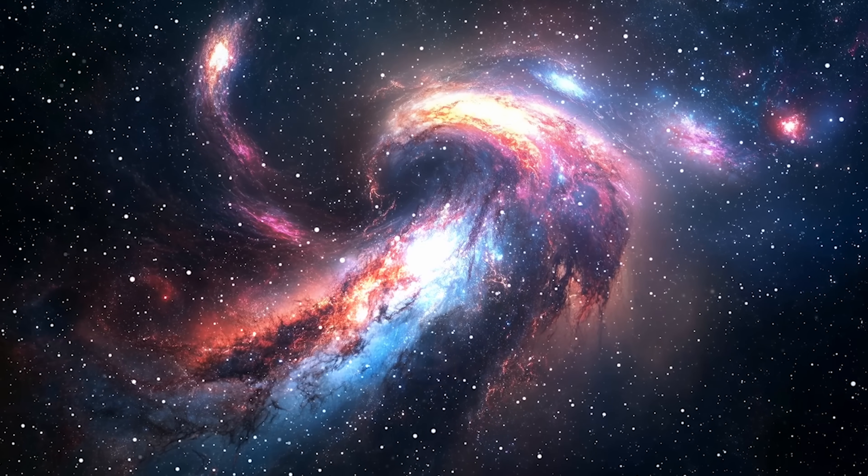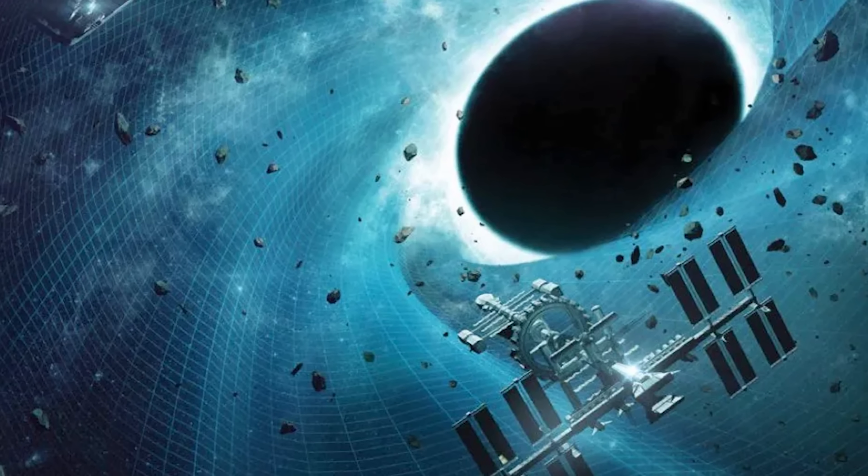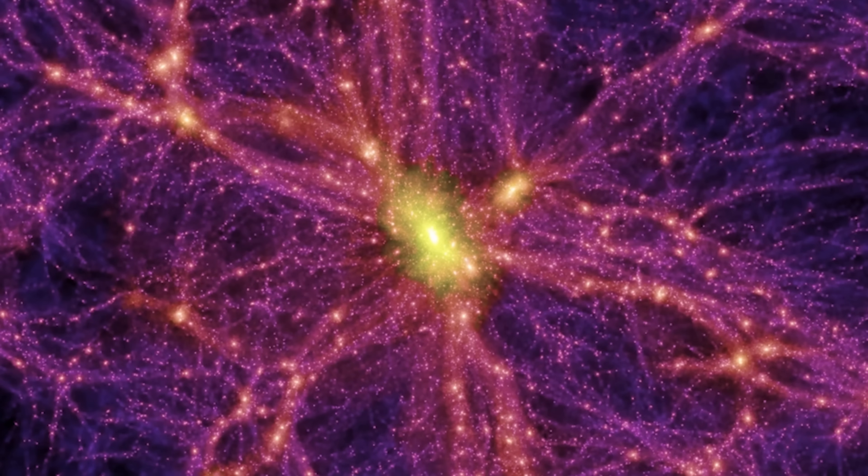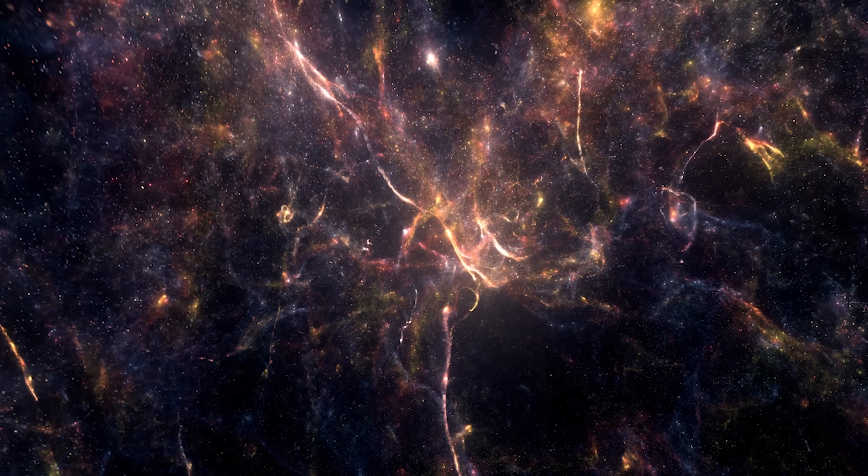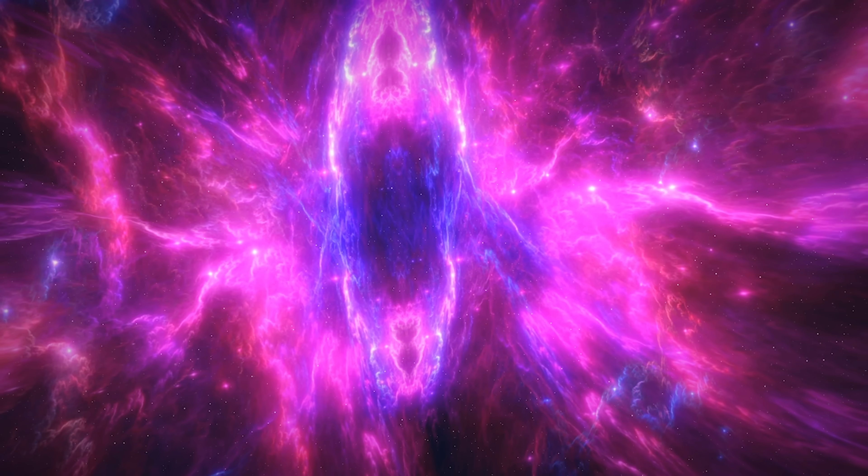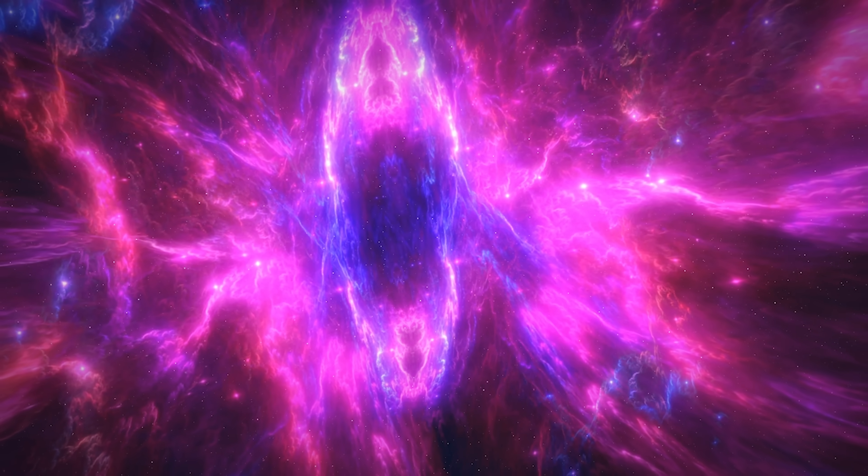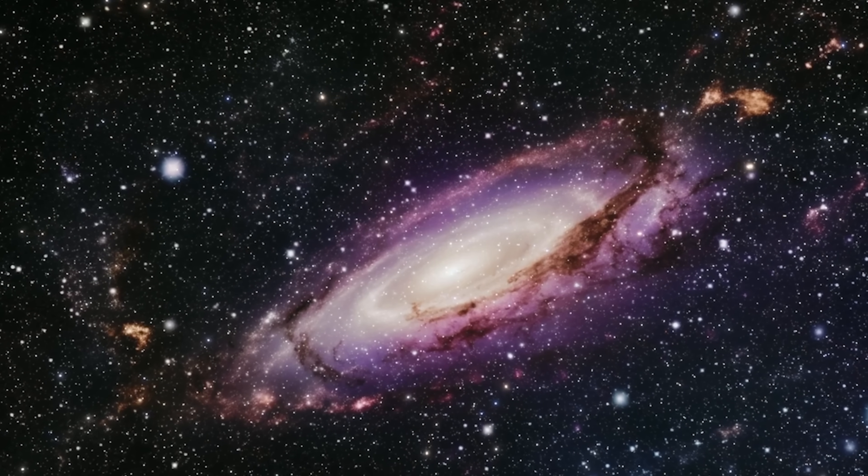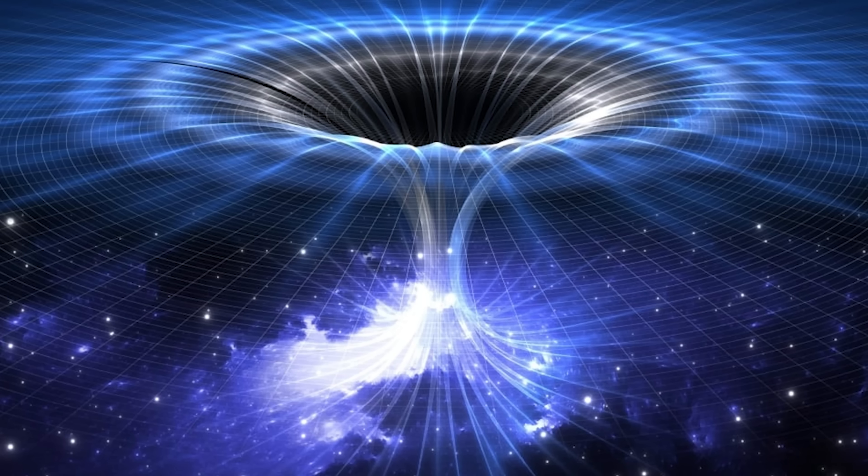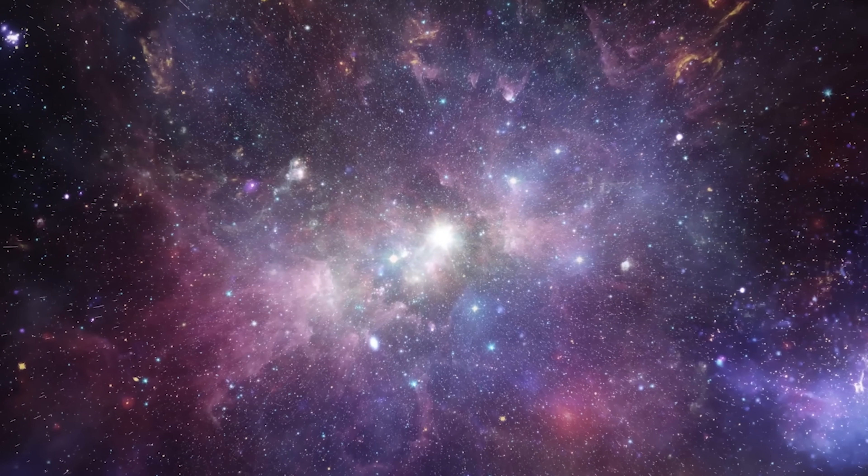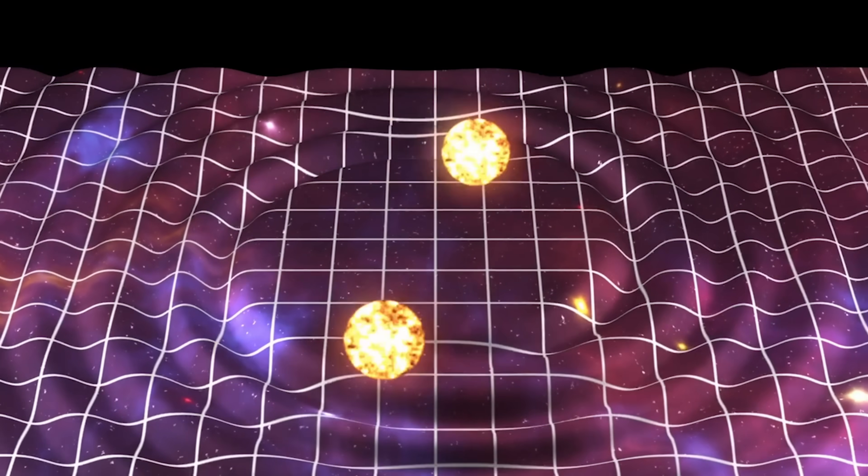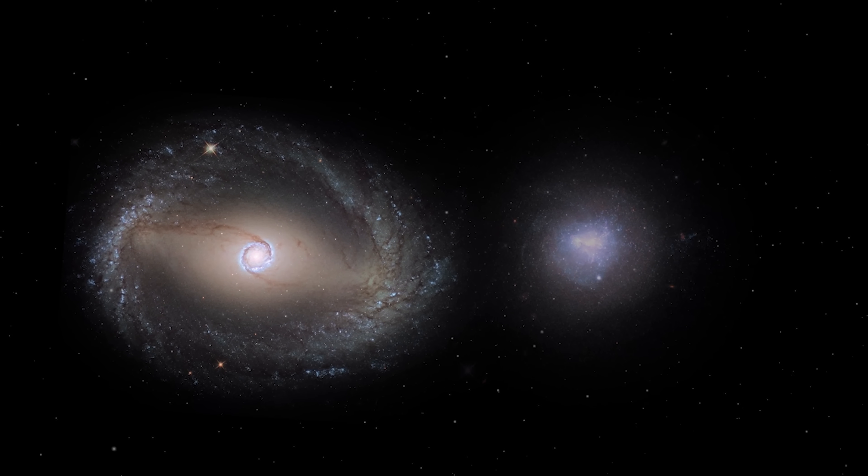Faced with a universe that expands too fast and builds galaxies too quickly, some scientists are now contemplating a radical alternative. What if we've been wrong about gravity? To explain the cosmos, we've had to invent two invisible substances, dark matter and dark energy. Together, they supposedly make up 95% of the universe. Yet we've never detected either. But what if the problem isn't missing matter, but a misunderstanding of gravity itself? This leads us to a controversial theory known as Modified Newtonian Dynamics, or MOND. Proposed in the 1980s, MOND suggests that on galactic scales, gravity is slightly stronger at very low accelerations than our current laws predict. This small tweak has huge consequences. With modified gravity, you can explain the rotation of galaxies without needing dark matter. The missing mass was never missing. Our equations were just incomplete.